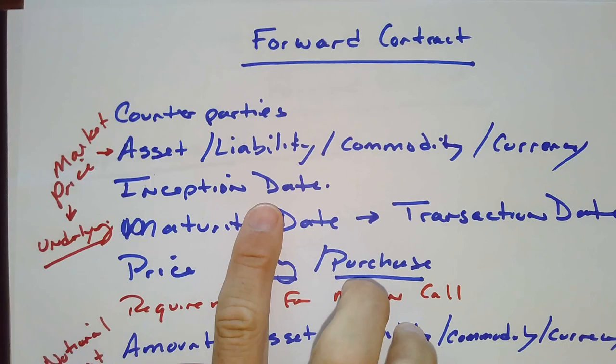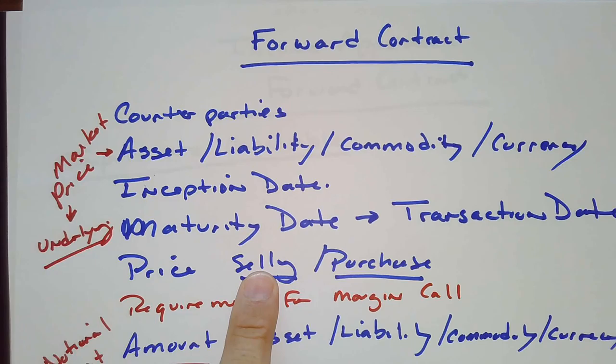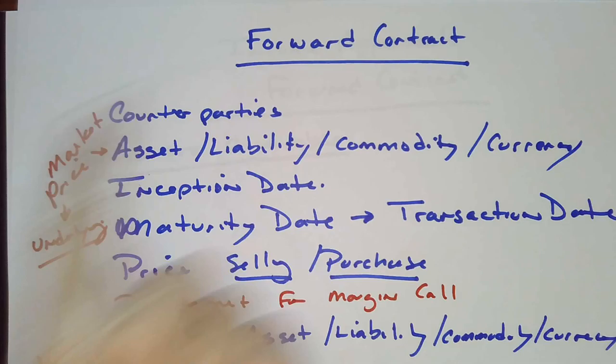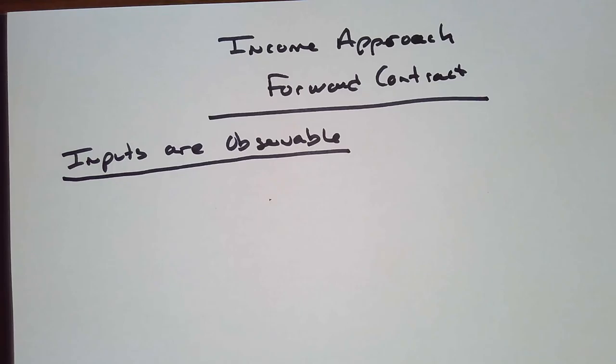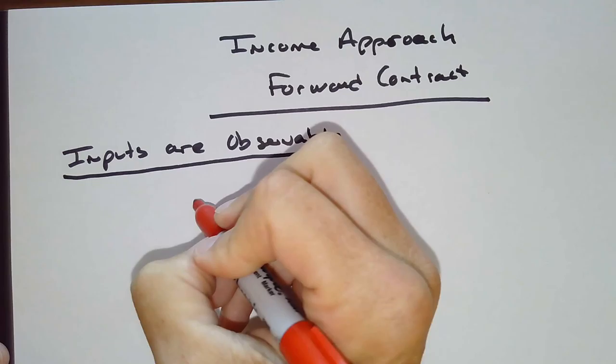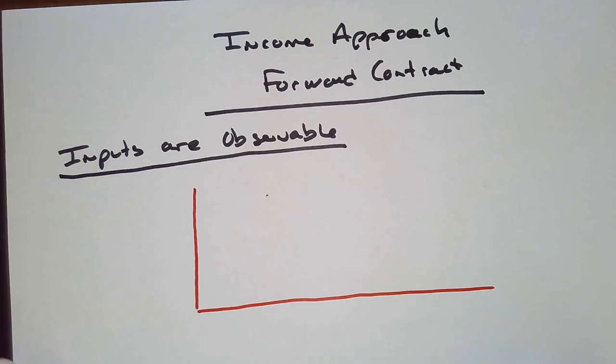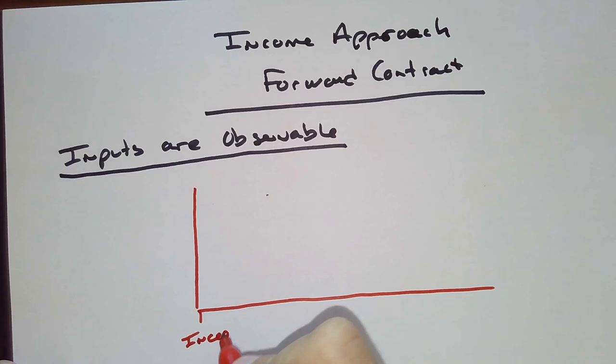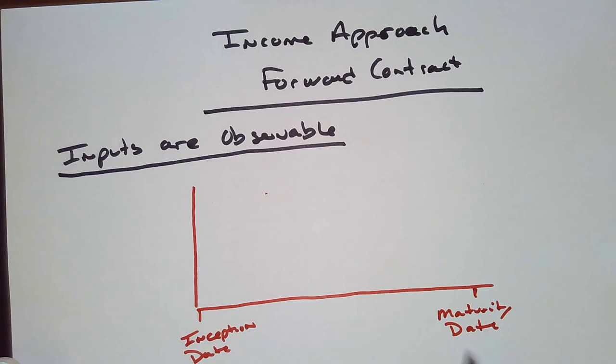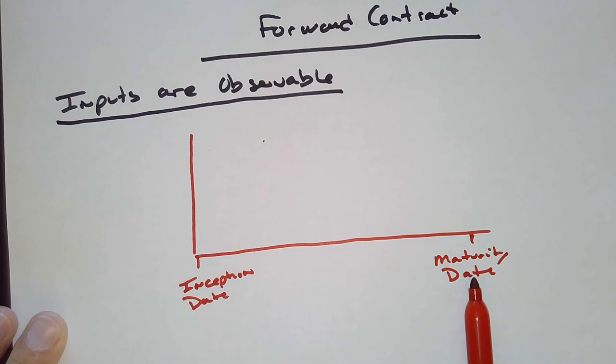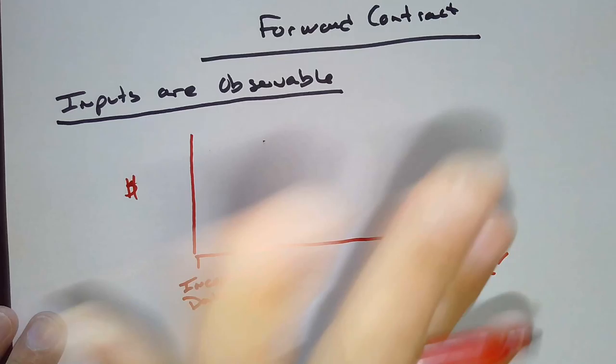We need to know the inception date, the maturity date, and the price that we're going to buy or sell it. Those are going to be three particular items. Obviously, the asset, the counterparty is all important, but we need to at least understand the inception date, maturity date, and whatever the price is. So I like to maybe draw this as a little bit of a graph here. And here is inception date. And here is transaction date or maturity date. Those are my two dates.